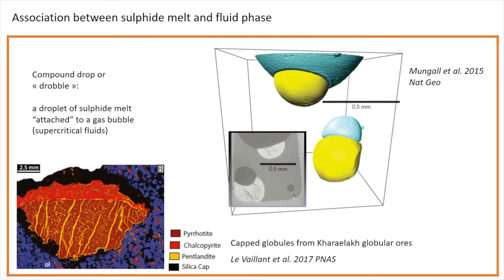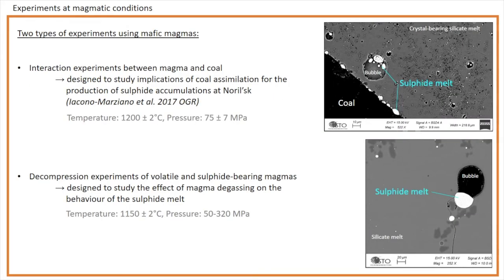You all know the natural droplets observed in Norilsk ores, that you see here. More recently they have been described in several other contexts. The advantage of experimental studies, compared to the studies of natural samples, is that the sulfide melt can be observed before crystallization and its association with the fluid phase better characterized. So I will use two types of experiments at magmatic pressures and temperature to illustrate the consequences of drobbles for both mobility and metal enrichment of the sulfide melts.